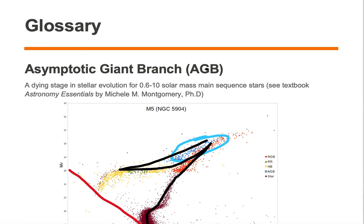The Asymptotic Giant Branch is a dying stage of stellar evolution for 0.6 to 10 solar mass main-sequence stars.